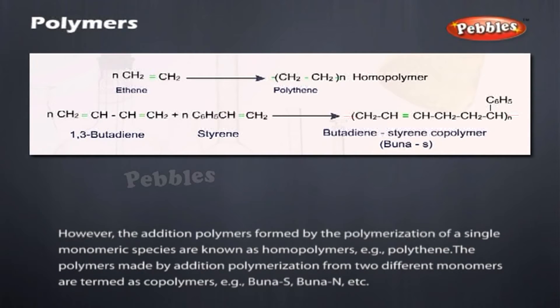The addition polymers formed by the polymerization of a single monomeric species are known as homopolymers. Example: polythene. The polymers made by addition polymerization from two different monomers are termed as copolymers. Examples include Buna-S, Buna-N, etc.